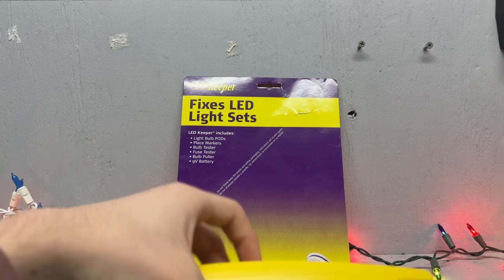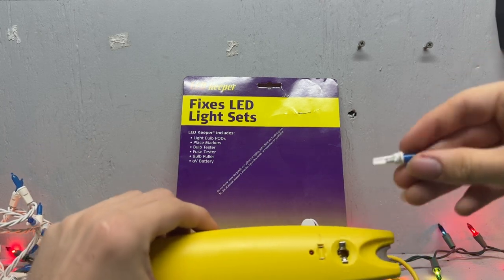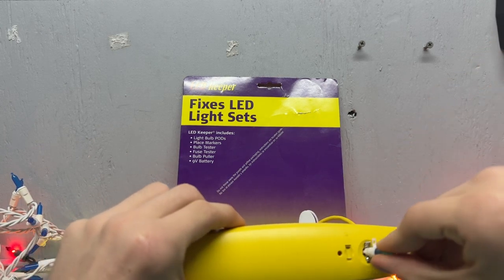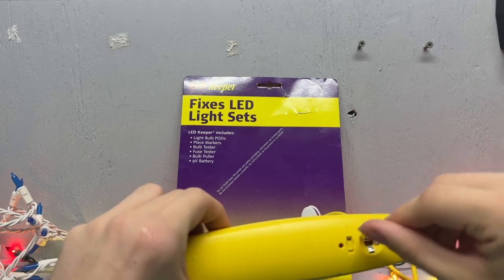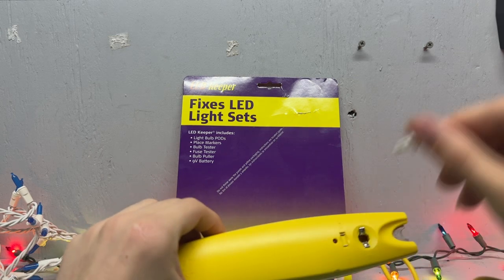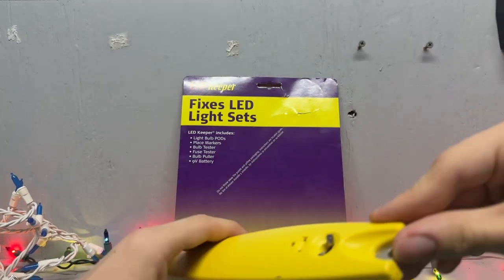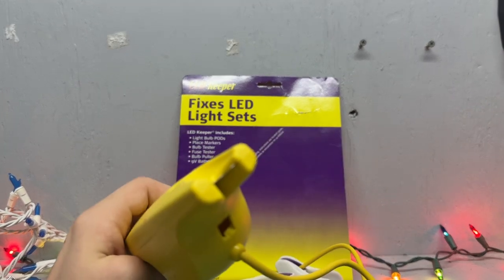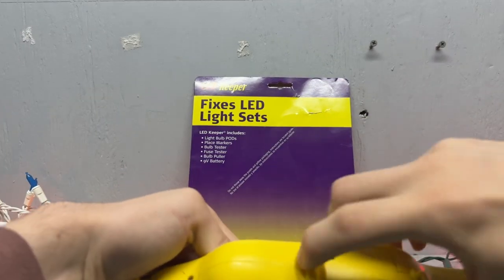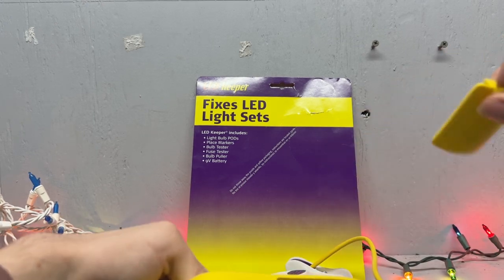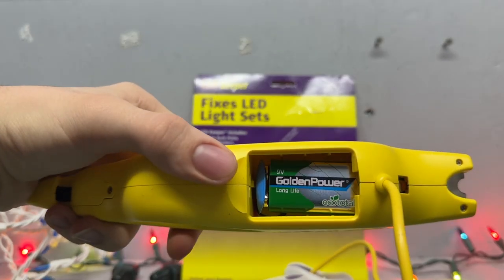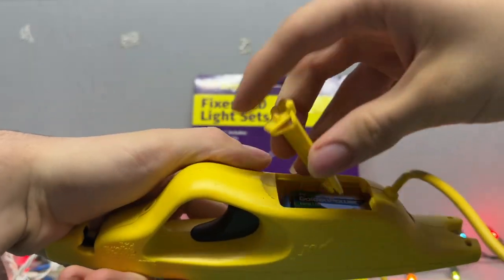It comes with a bulb tester and a fuse tester. So, LED lights only work one way. But you see, I just put a bulb and it turned on. It also has a bulb puller, which I'll show later. And it comes with a 9-volt battery, which is the same battery used in most smoke detectors. And that's the one that came with it. I hadn't had to replace it yet.